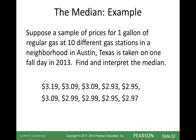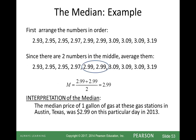Now let's talk about how we do it without technology. We put all values in order and we have 10 data points. Since we have an even number, there is no single middle number, so we take the two middle numbers — both are 299 — add them together and divide by 2. The median price of gas in Austin, Texas on that day in 2013 is $2.99, meaning half the gas stations were more expensive and half were less expensive.